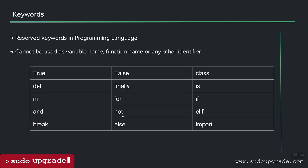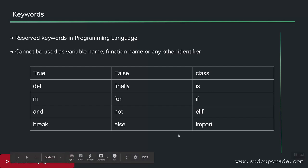In any programming language there are reserved keywords you cannot use to name a function or variable. In Python, for example: 'def' defines a function, 'True', 'False', 'class', 'if', 'else', 'and', 'not' — all of these have specific meaning in Python and can only be used for their intended purpose.